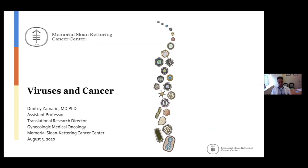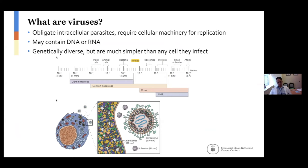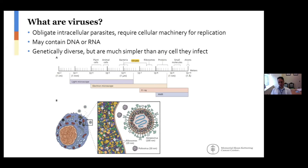We'll start with the very basics. What are viruses? Viruses are obligate intracellular parasites — they cannot survive outside of the cell. They really require cellular machinery for replication. Viruses may come in many different flavors. Their genetic material may contain either DNA or RNA. They are very genetically diverse, but they're much simpler than any cell that they infect. In fact, they're much smaller than any cell that they may infect.